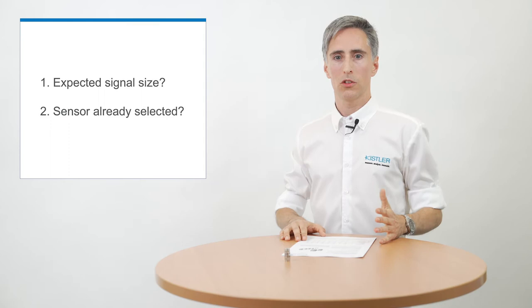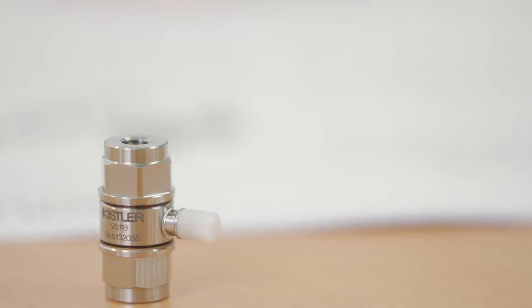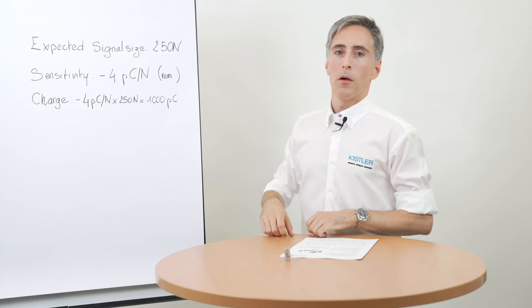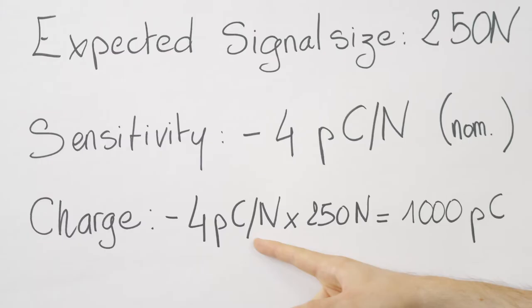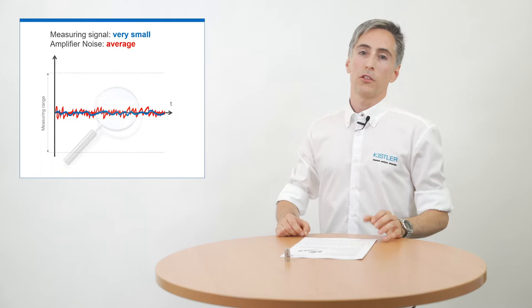First questions are how big are the signals you want to measure and have you already selected your sensor? If so, you should have the sensitivity value which tells you how many picocoulombs the sensor delivers per physical quantity like newton for example. The nominal sensitivity value you find in the datasheet. By multiplying the sensitivity value with the expected signal size, you get the amount of picocoulombs you want to measure with your charge amplifier.